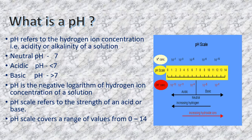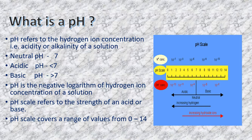The term pH was introduced by P.L. Sørensen in the year 1909. He was a Danish chemist. According to him, pH refers to the hydrogen ion concentration — that is, the acidity or alkalinity of a solution — and it is defined as the negative logarithm of the hydrogen ion concentration of a solution.